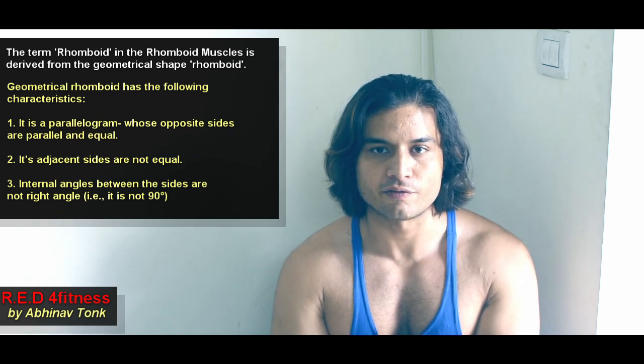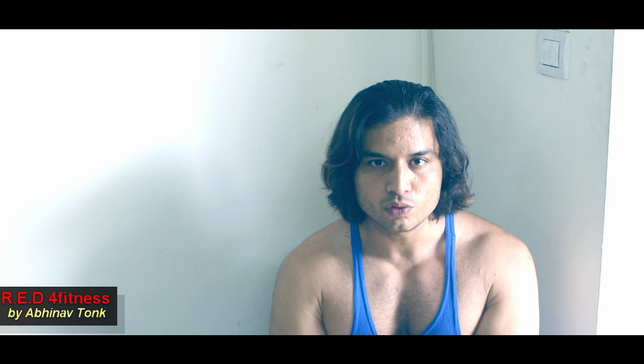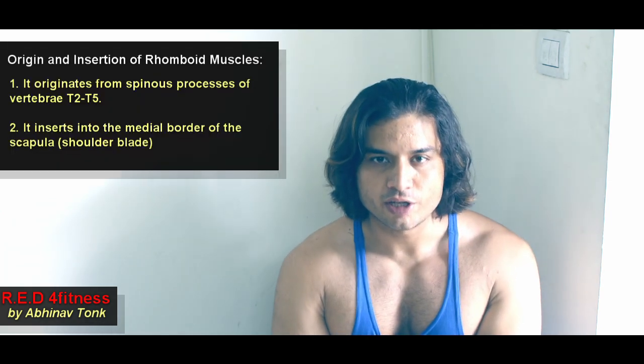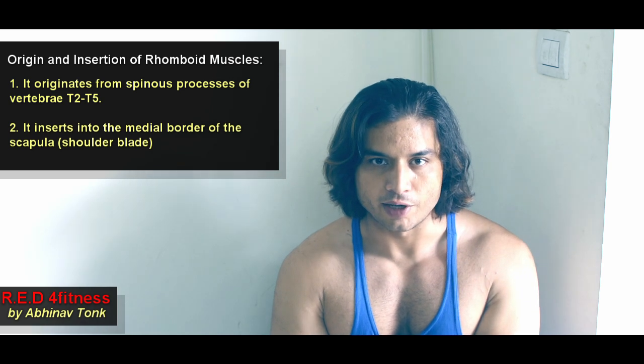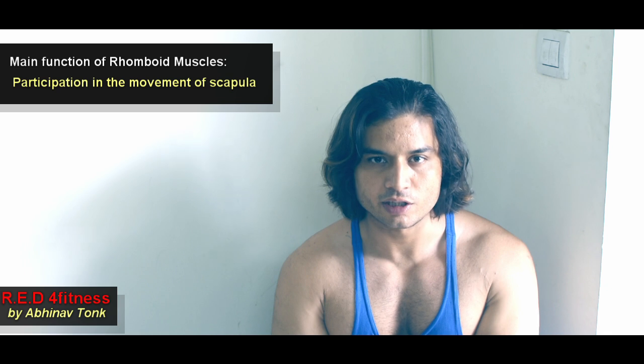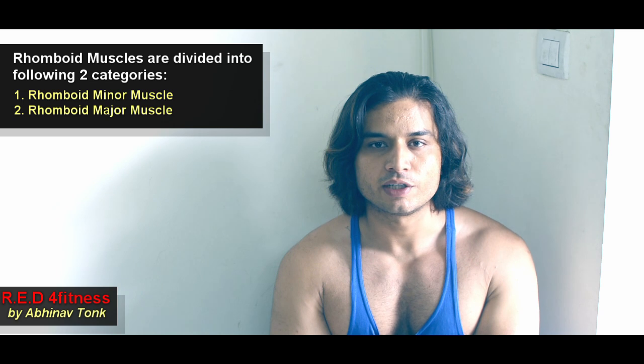The rhomboid originates from the spinous process of vertebrae T2 to T5 and inserts into the medial border of the scapula — the scapula being the shoulder blade. The main function of the rhomboid is its participation in the movement of the scapula. The rhomboid muscle is divided into two categories: rhomboid minor and rhomboid major.